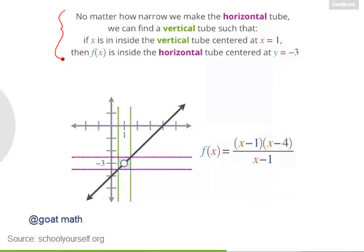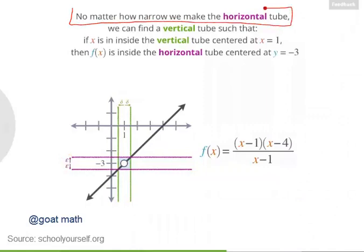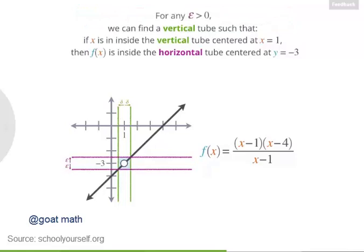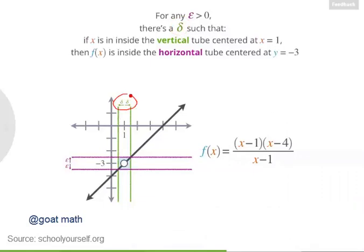Let's rewrite this statement more mathematically. We call the width of the vertical tube delta and the width of the horizontal tube epsilon. Saying 'no matter how narrow we make the horizontal tube' means epsilon can have any value greater than 0 — even teeny tiny, just a little greater than 0. And 'we can find a vertical tube' means there exists some width delta. So: for any epsilon you pick, there's a value of delta such that if x is inside the vertical tube centered at 1, then f of x is inside the horizontal tube centered at negative 3.